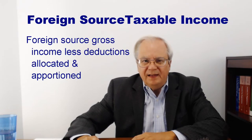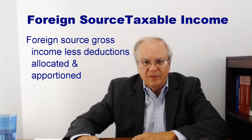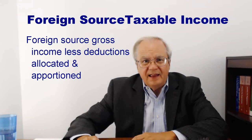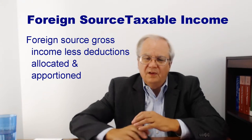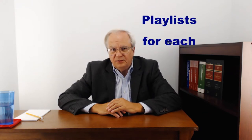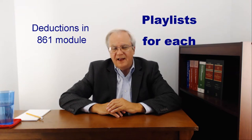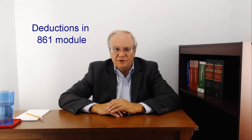Foreign source taxable income means foreign source gross income reduced by deductions allocated and apportioned to that income. We already discussed how to determine what income is from what source in the source module, and we'll discuss how deductions are allocated and apportioned in the 861 module.